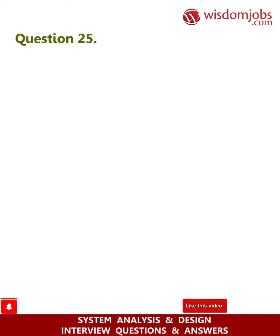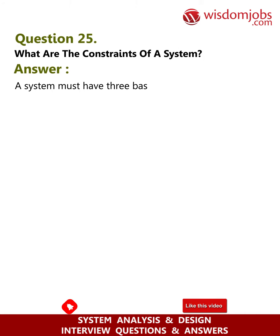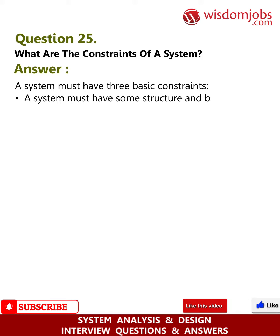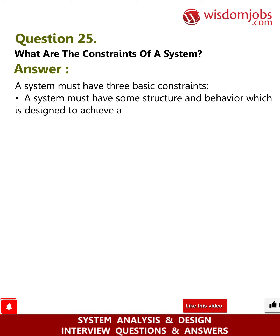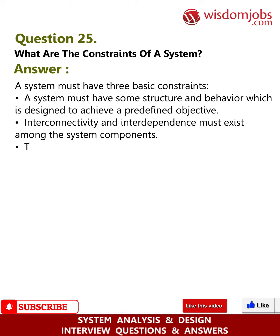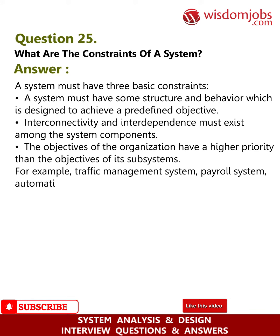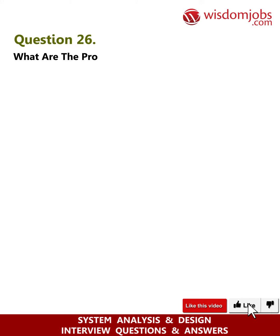Question 25: What are the constraints of a system? Answer: A system must have three basic constraints. A system must have some structure and behavior designed to achieve a predefined objective. Interconnectivity and interdependence must exist among the system components. The objectives of the organization have a higher priority than the objectives of its subsystems. For example: traffic management system, payroll system, automatic library system, human resources information system.